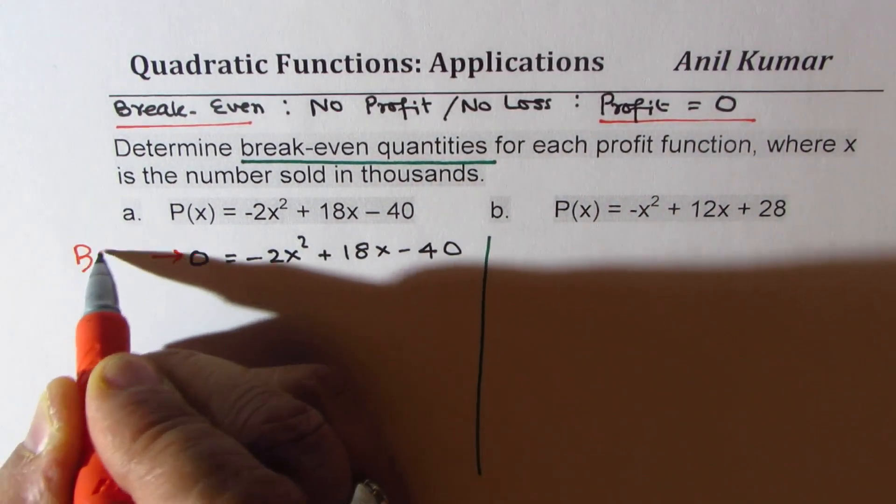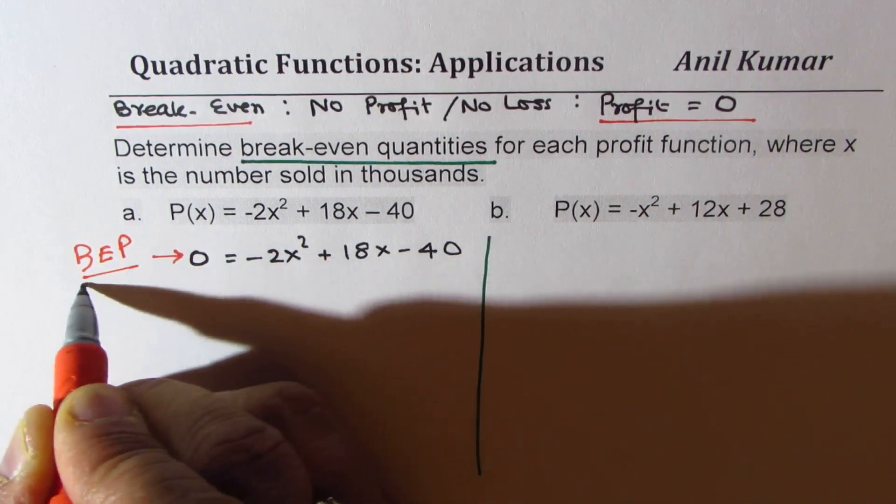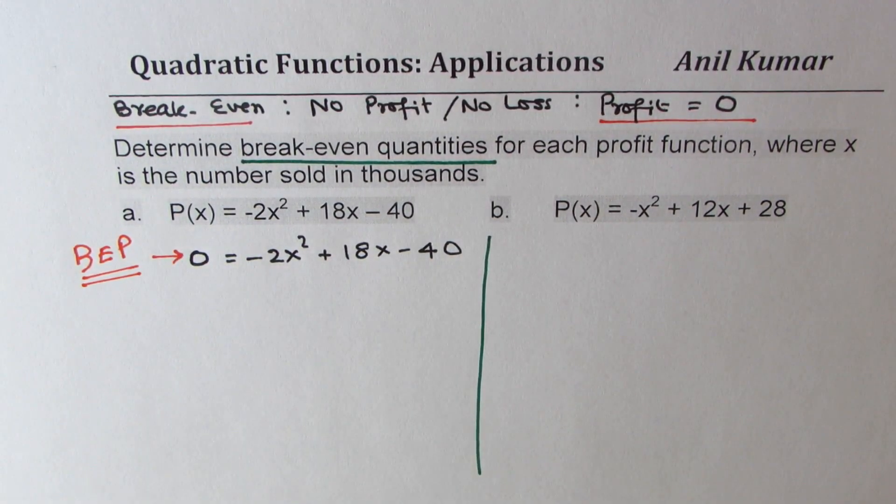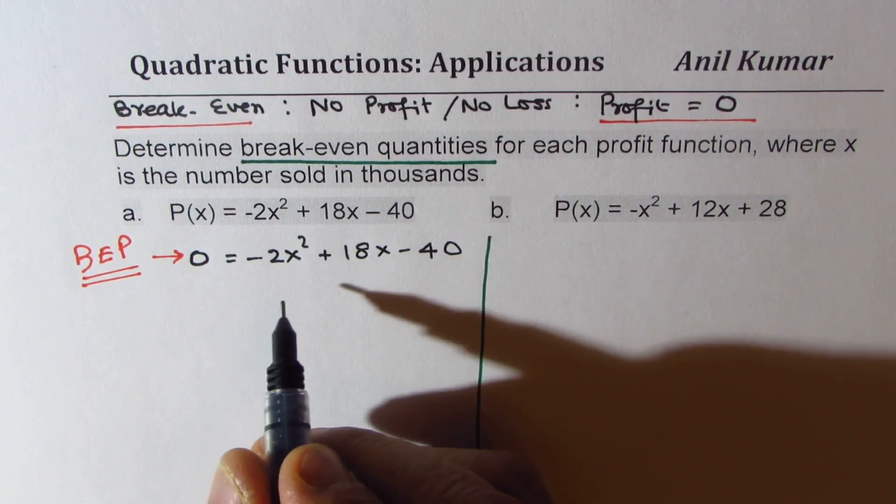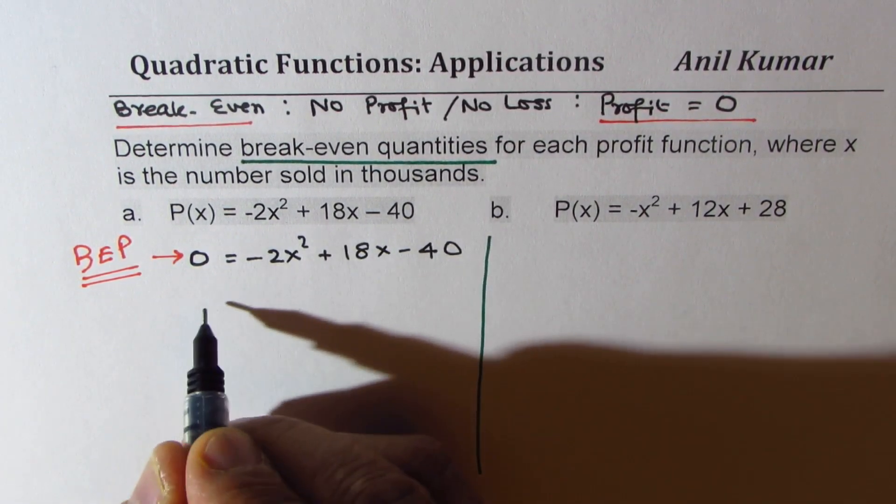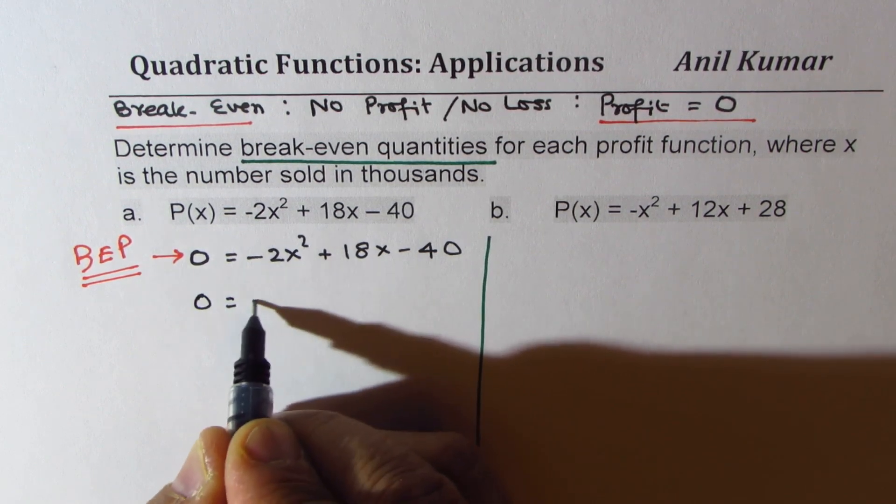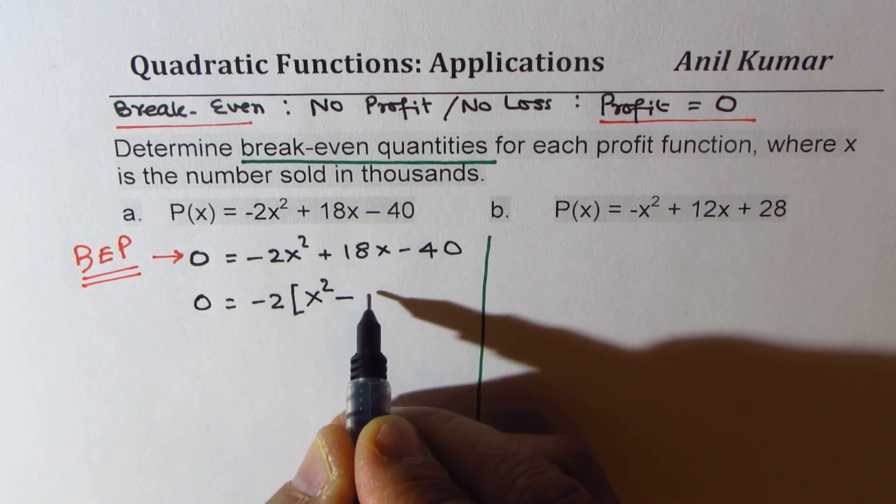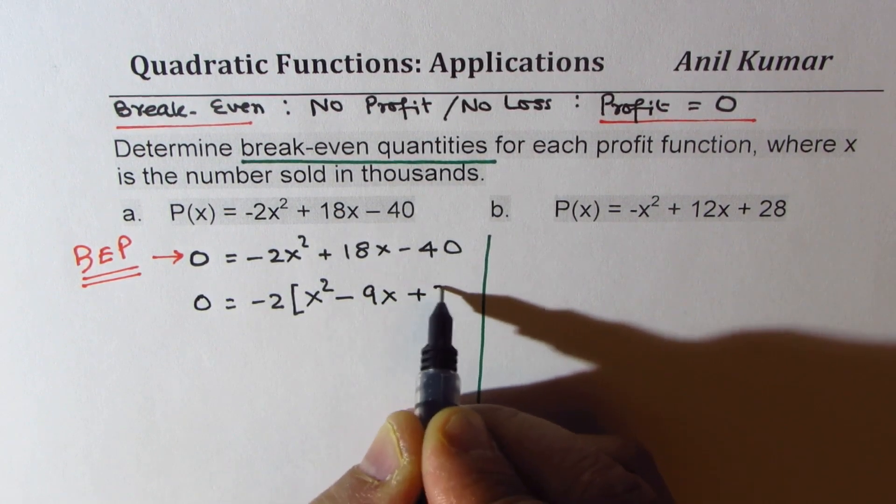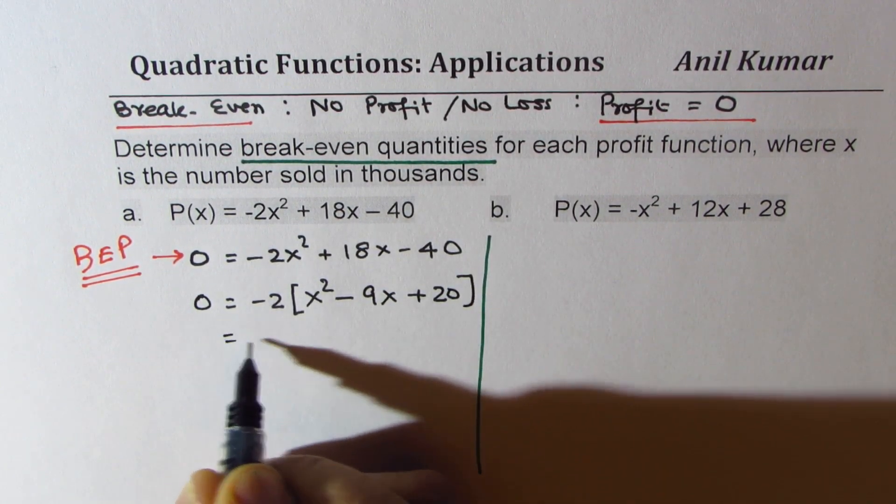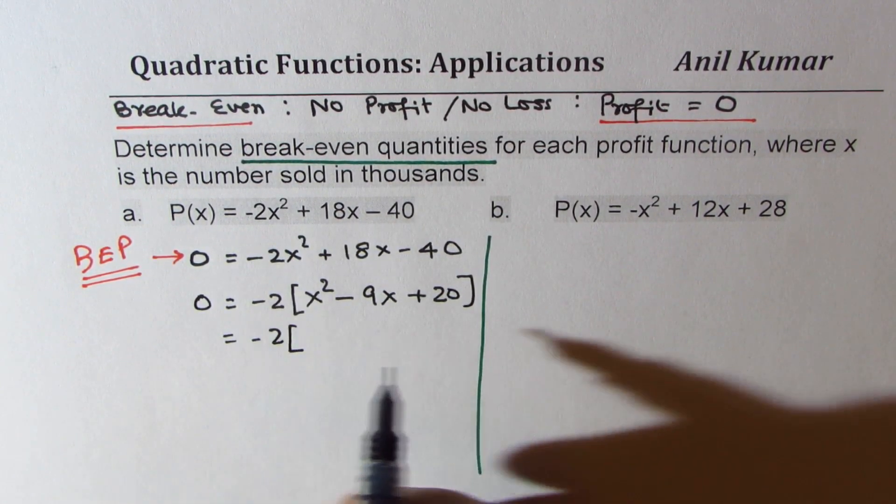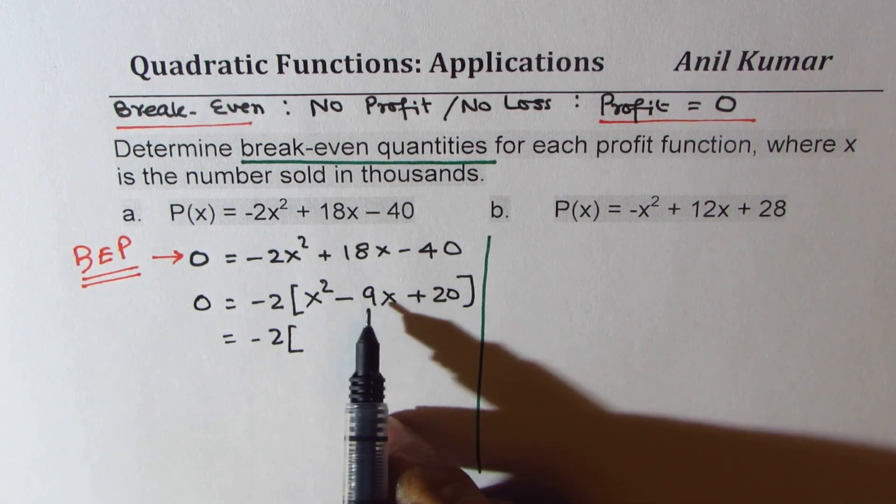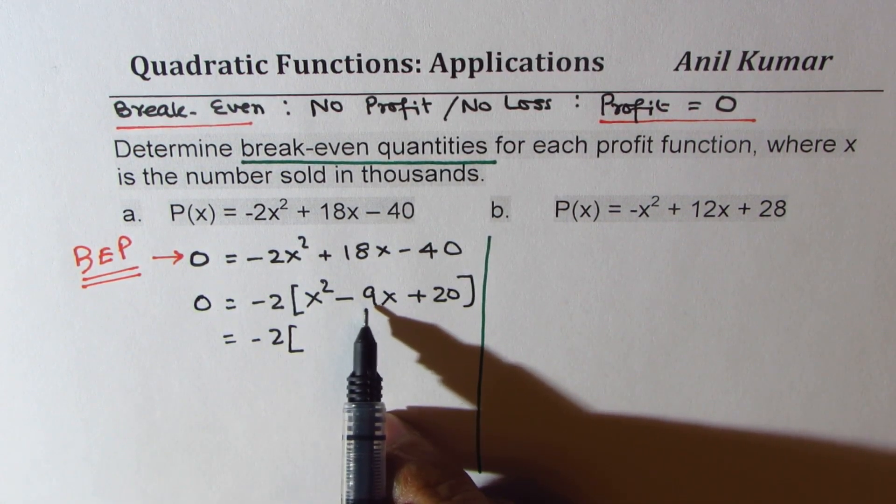This is to find the break-even point. Now we can use factoring or even quadratic formula. This is easy factoring, so we'll just factor out minus 2 first. So we get x² - 9x + 20.